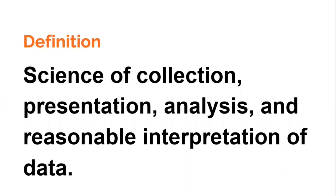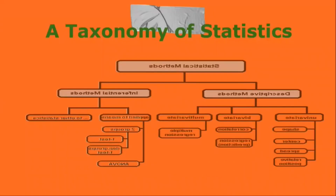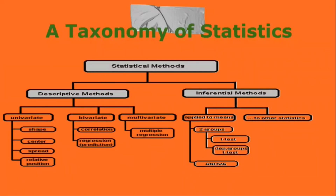Besides data summarization, another important task of statistics is to make inference and predict relations of variables. A taxonomy of statistics: statistics has two main branches, descriptive and inferential. In descriptive methods we have univariate, bivariate, and multivariate statistics. For univariate statistics, what can be done includes shape, center, spread, and relative positions. Bivariate statistics looks at things like correlation and regression for prediction purposes. Lastly, we have multiple regression in multivariate statistics.